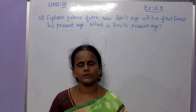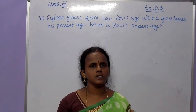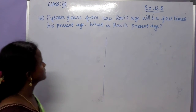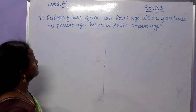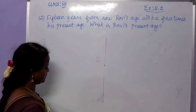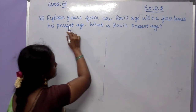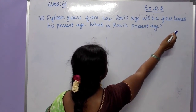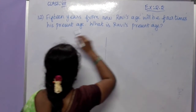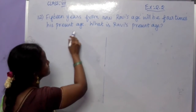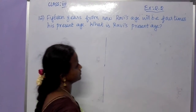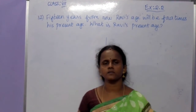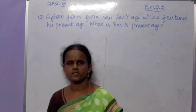Next, we are going to see the 12th sum. Read the sum: 15 years from now, Ravi's age will be 4 times his present age. What is Ravi's present age?